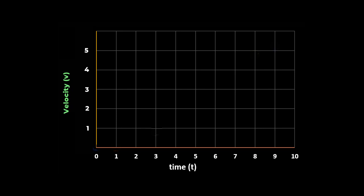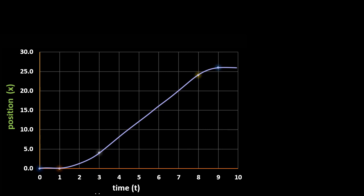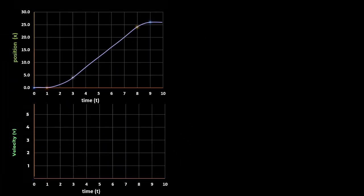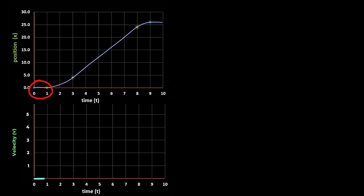Let us see how a velocity versus time graph can be made using the position versus time graph. Given an x versus t graph, we will draw a velocity versus time graph. Between t = 0 and t = 1 second, the position of the particle is not changing, which means velocity is 0. The graph is a flat line, so the tangent at any point also has zero slope, meaning the velocity at every point is also 0.